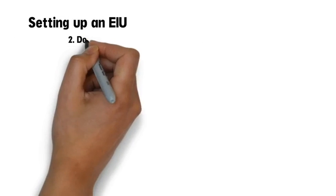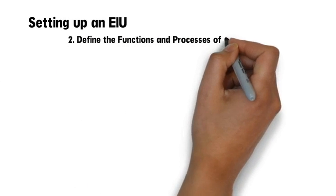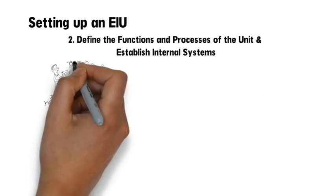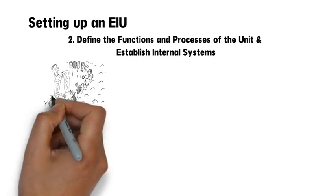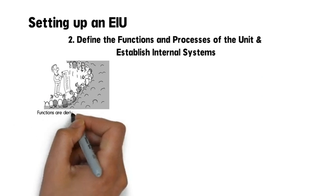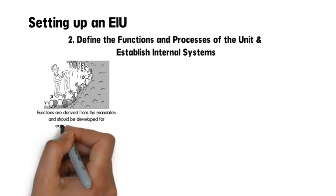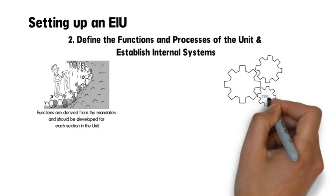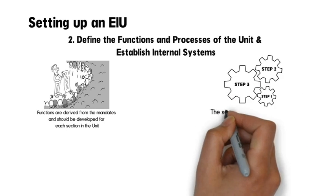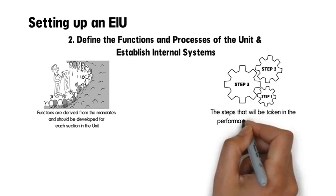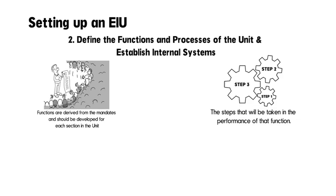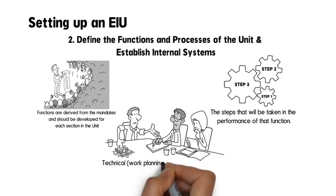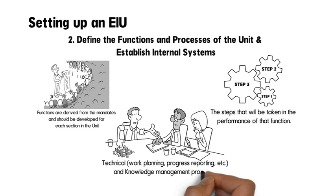Define the functions and processes of the unit and establish internal systems. Functions are a brief description of the tasks that the EIU will perform, derived from the mandates and developed for each section in the unit. Each function should have a process outlined — that is, the steps that will be taken in the performance of that function — covering financial management, accounting procedures, technical work planning, progress reporting, and knowledge management processes.